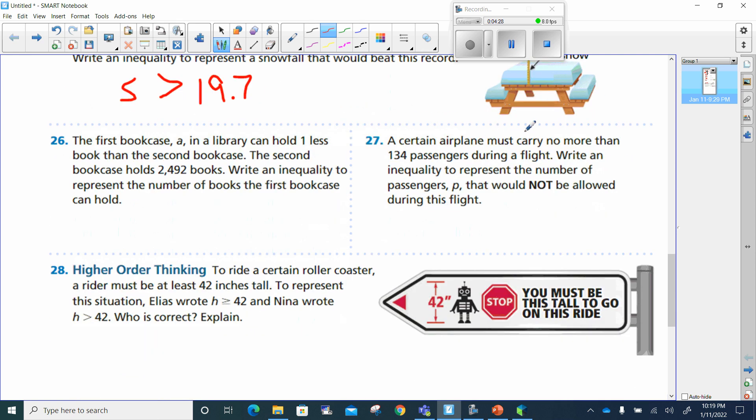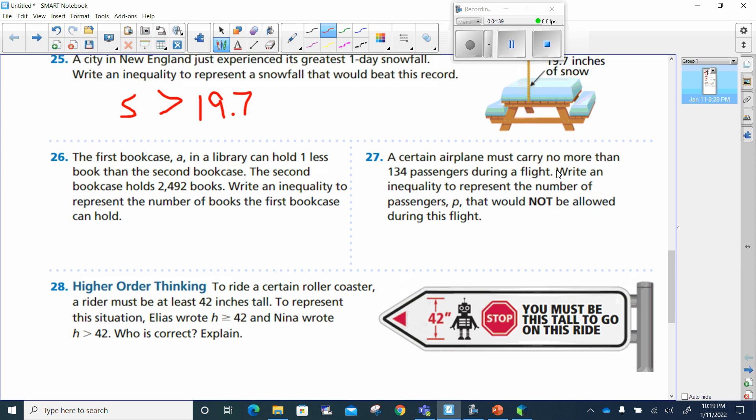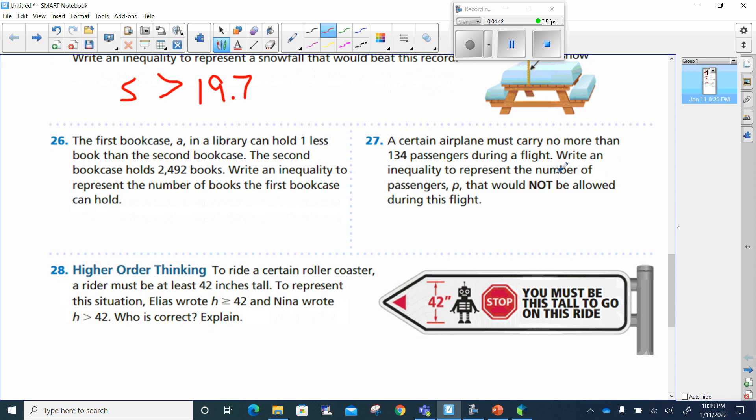Number 27. A certain airplane must carry no more than 134 passengers during a flight. Write an inequality to represent the number of passengers p that would not be allowed during this flight. We have the number 134. It says can carry no more than. No more, so that means it can be less than, and remember, it can be less than, it can even be equal to it, and it cannot be more than it.